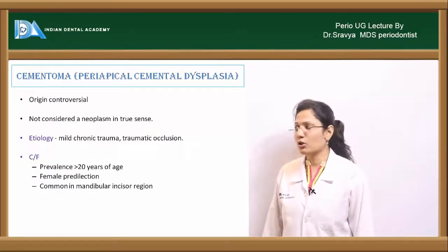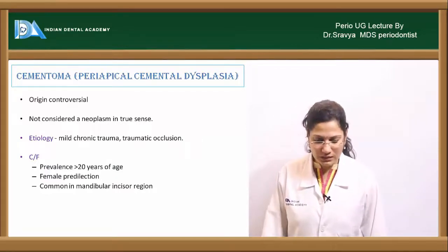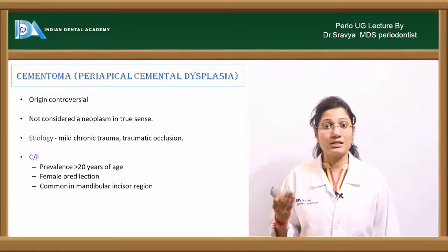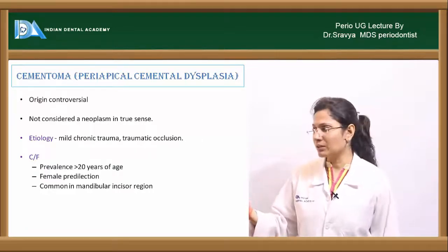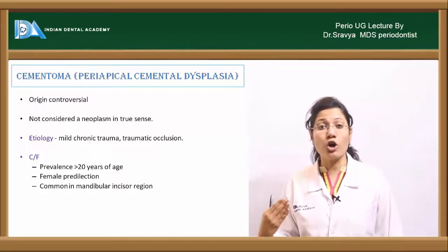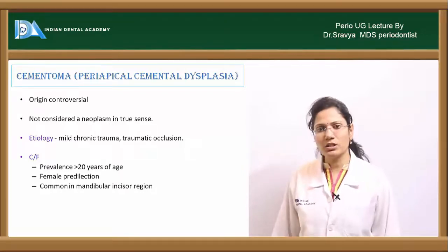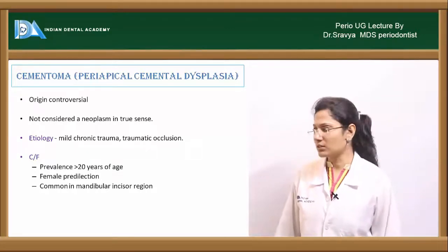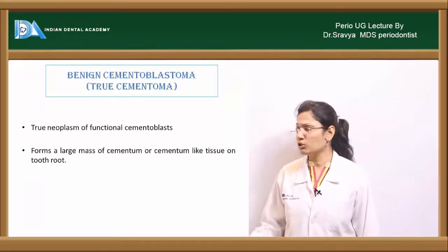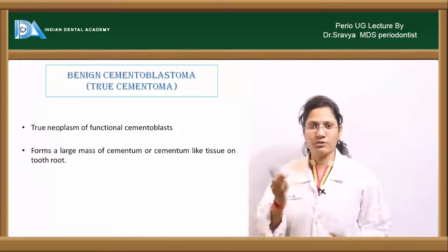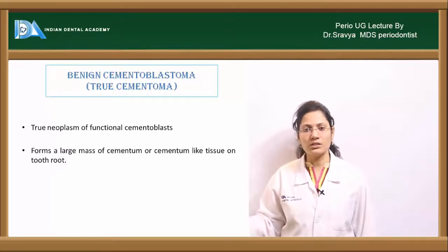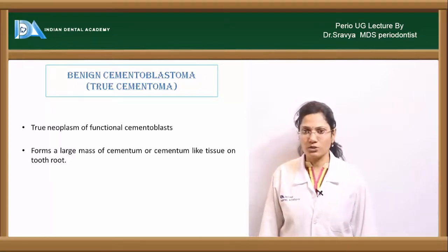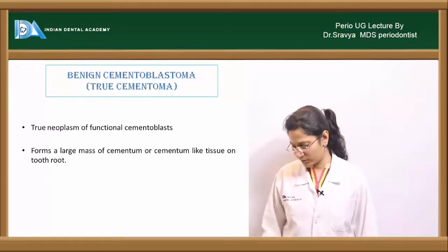Cementoma, also called periapical cemental dysplasia, is controversial in origin and is not a true neoplasm — the term 'oma' is a misnomer. It is associated with mild chronic trauma and traumatic occlusion. Clinically, it is mostly seen in females under 20 years, commonly in the mandibular incisor region. True cementoma, or benign cementoblastoma, is a true neoplasm of functional cementoblasts forming a large mass of cementum on the tooth root.